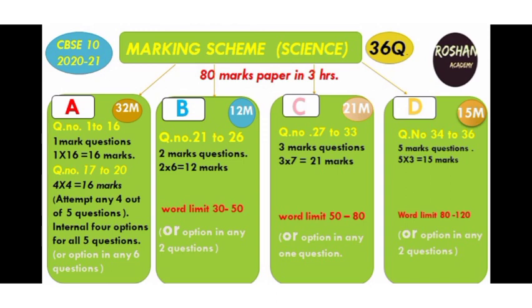Section B carries 12 marks in all. Here we have question numbers 21 to 26 — they are all two-mark questions, meaning six questions of two marks each, totalling 12 marks. The word limit is 30 to 50 words. Here also you can see an 'or' option coming among any two of the questions between 21 to 26.